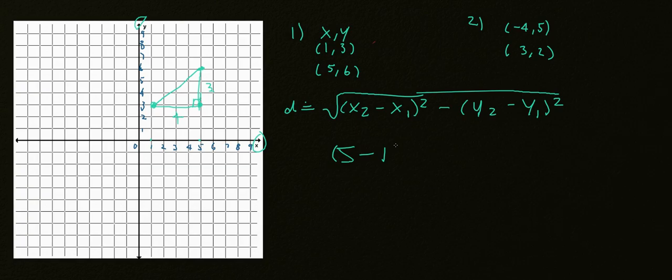Okay, so what's x sub 2? Well, x sub 2 is actually the last point that we plotted, which is (5,6). So it will be 5 minus 1. And then what's y sub 2? It's the last y that we plotted, which is 6 minus 3.